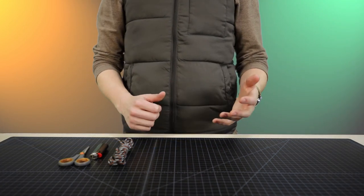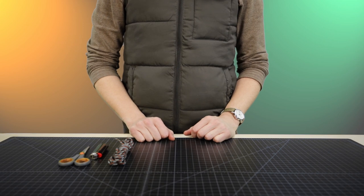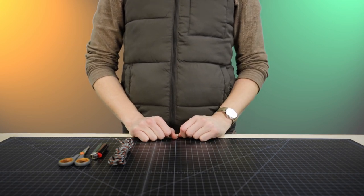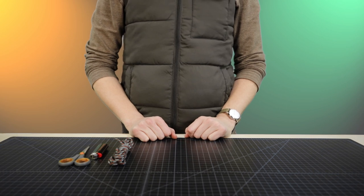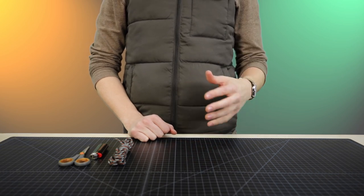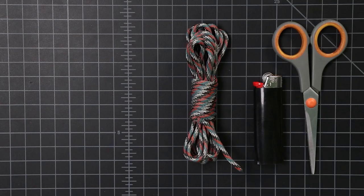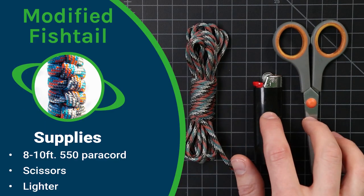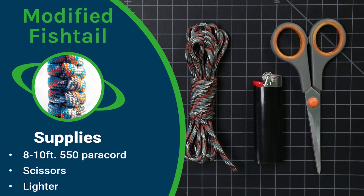Hey guys, today we're going to be making a modified fishtail paracord bracelet. This idea is based off of JD Lenzen of Tying It All Together. He has a video called a stitched switchback strap bracelet, but since it is so similar to the fishtail, we're just going to go with that name. For this project, all you're going to need is 8 to 10 feet of 550 paracord, and then our tools of scissors and a lighter. Let's dive right in.